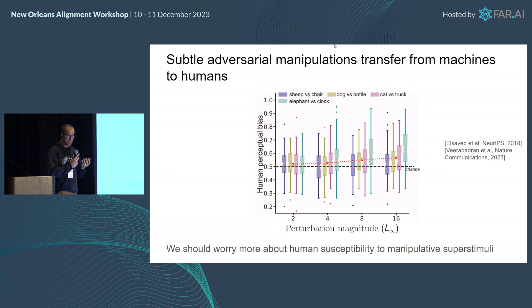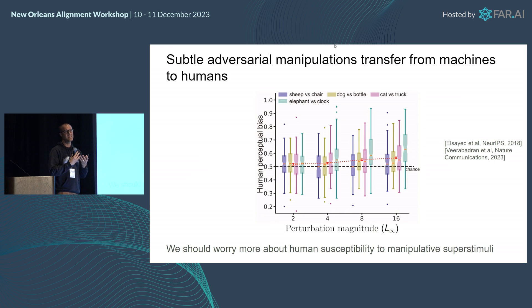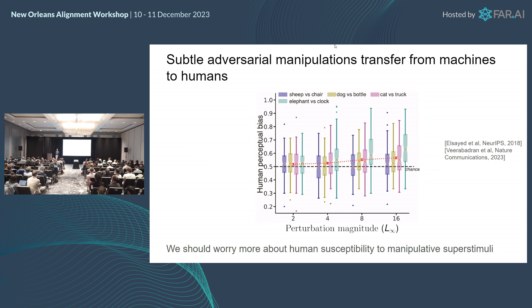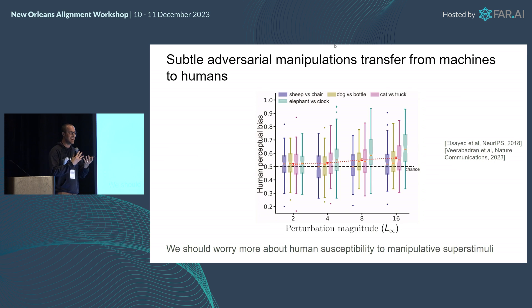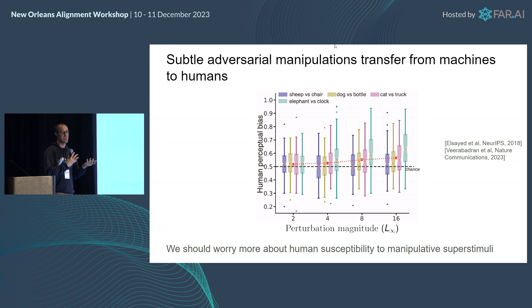This is super cool scientifically because it suggests there are even closer and more surprising correspondences between subtle behaviors of artificial neural networks and the human brain. It's also quite worrying because it suggests that some of the more sci-fi, strong, targeted manipulations we are able to do to make artificial neural networks behave in bad ways also transfer to some degree to the human brain — and the human brain may be susceptible to similar things. So we should worry more about manipulative superstimuli targeted at us.